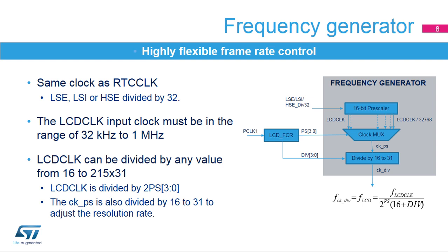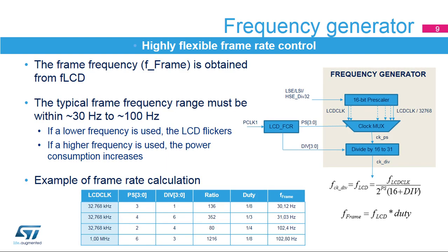The output of the frequency generator, FCKDIV, constitutes the time base for the entire LCD controller. It is equivalent to the LCD phase frequency. The frame frequency, or F-frame, is determined by dividing FCKDIV, or FLCD, by the number of active common terminals, or multiplying it by the duty rate. The typical frame frequency must be selected to be within a range of around 30 to 100 Hz. The selected frequency must be a compromise between an acceptable refresh rate that avoids flickering and the power consumption which increases with the frequency. The following table shows examples of frame rate calculations by specifying PS[3:0] and DIV[3:0] values for different LCD CLK frequencies.